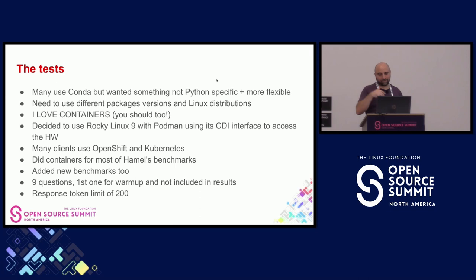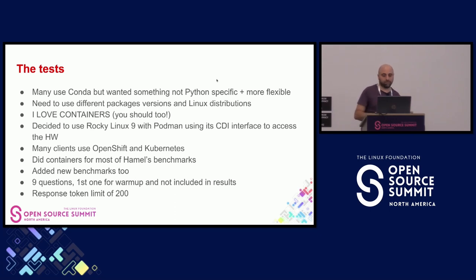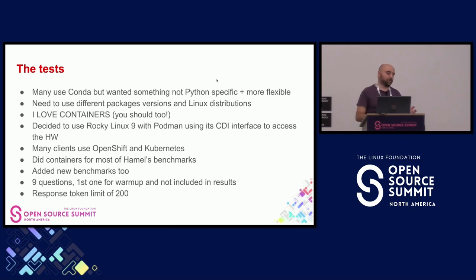We use different Linux distributions depending on the executor — some executors couldn't run on Rocky Linux and we had to use Ubuntu, so that flexibility from containers is very useful. We decided to use a Rocky Linux setup with Podman, using the Container Device Interface (CDI), which allows direct access to GPU hardware without any overhead. This is important — we don't want to lose any performance. Many clients already use OpenShift and Kubernetes, so this approach is familiar. We started creating containers for most of Hamel's benchmarks and contributing those containers back.